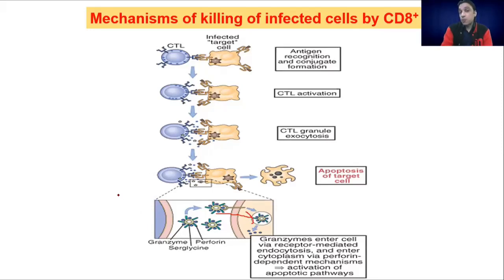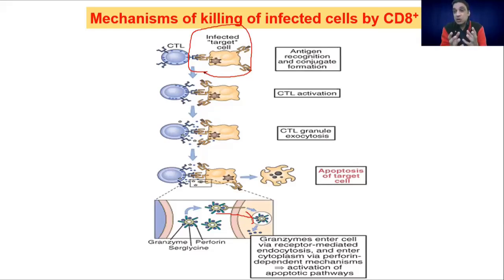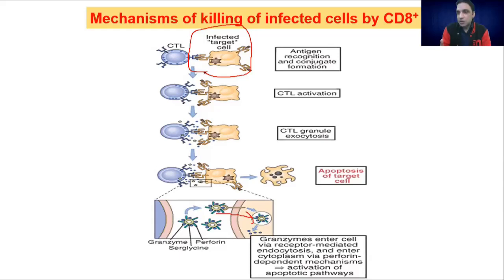The CTL cells must be activated at the right place — they should be activated only when they touch an infected cell. If CTL cells got activated in the wrong place, they would release these weapons and kill healthy cells too. That is why it is absolutely necessary that CD8 cells are trained. The trained CD8 cells against a particular antigen understand where they need to get activated and where to find those infected cells.